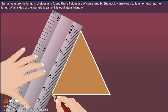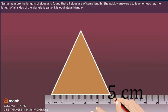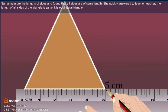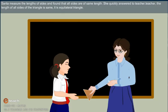Sarita measured the lengths of sides and found that all sides are of same length. She quickly answered to teacher. 'Teacher, the length of all sides of the triangle is same. It is an Equilateral Triangle.'